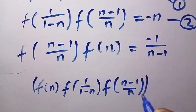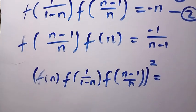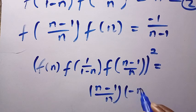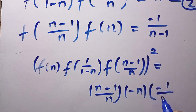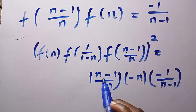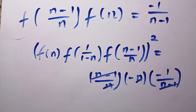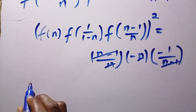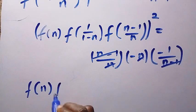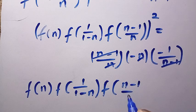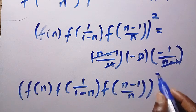If we multiply all three equations together, every function value appears exactly twice, so the left-hand side is [f(n) times f(1/(1 minus n)) times f((n minus 1)/n)] all raised to the power of 2. The right-hand side is (n minus 1)/n times n times 1/(1 minus n), which simplifies to 1. So we have the product of the three function values squared equals 1.